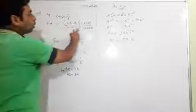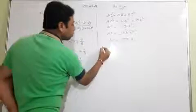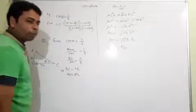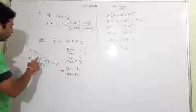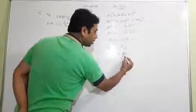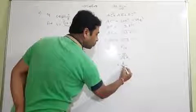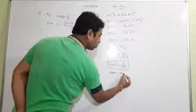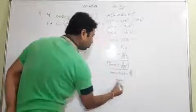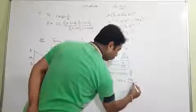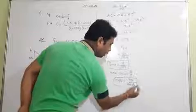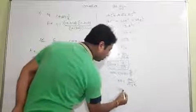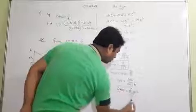Now we have all values in the form of k. Find sine theta: perpendicular upon hypotenuse. Perpendicular is 8k and hypotenuse is root 113 k, so k and k cancel — sine theta is 8 upon root 113. For cos theta: base upon hypotenuse. Base is 7k upon root 113 k, k and k cancel — cos theta is 7 upon root 113.